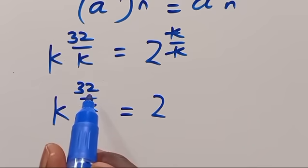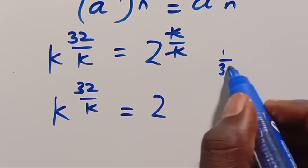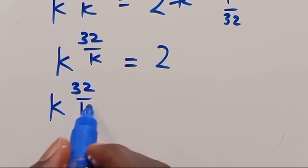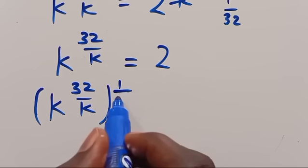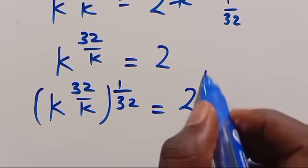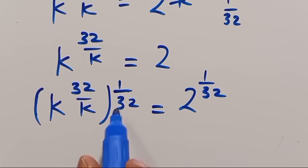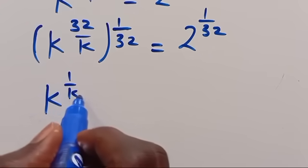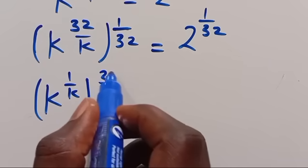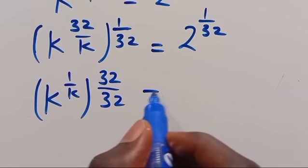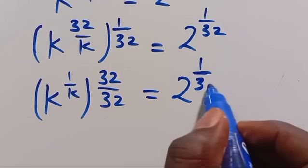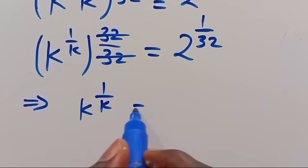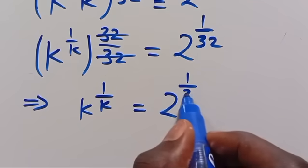Again, let's try to eliminate this 32 by raising the power of both sides by 1 divided by 32. So from here, we are going to have K to the power of 32 divided by K, then in parentheses to the power of 1 divided by 32, equals 2 to the power of 1 divided by 32. We can arrange this to be K to the power of 1 divided by K, since 32 divided by 32 cancels out, equals 2 to the power of 1 divided by 32.